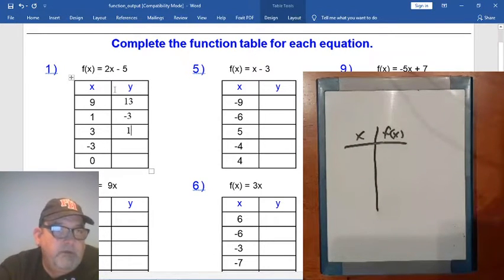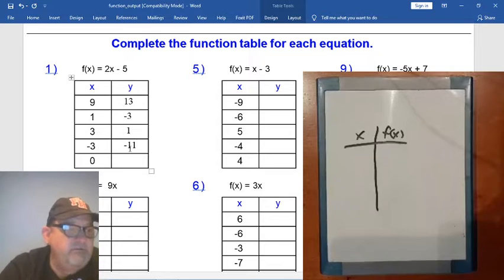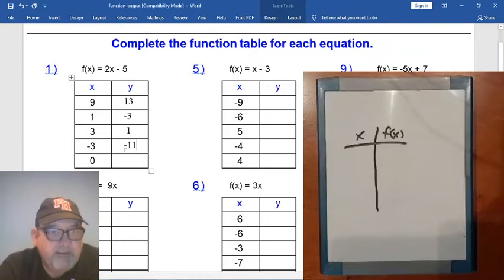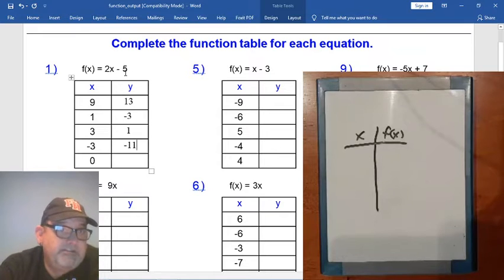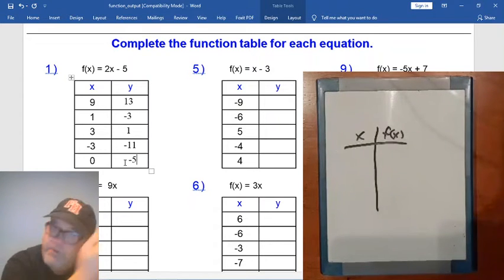Negative 3. 2 times negative 3 is negative 6. Negative 6 minus 5 more is negative 11. So you guys got to be careful with positive and negative signs with these so that you know that you're adding and subtracting correctly. How about 0? Well, 2 times 0 is 0, and 0 minus 5 is minus 5. All right. So that should give you an idea.